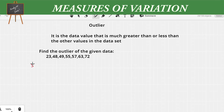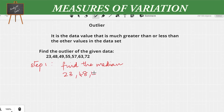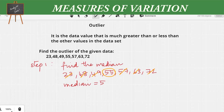The question says: find the outlier of the given data. Step one is to find the median. To find the median, arrange the numbers in ascending order from least to greatest: 23, 48, 49, 55, 57, 63, and 72. Striking each number from each side, you will find the number 55 in the center. So the median of this sequence is 55.